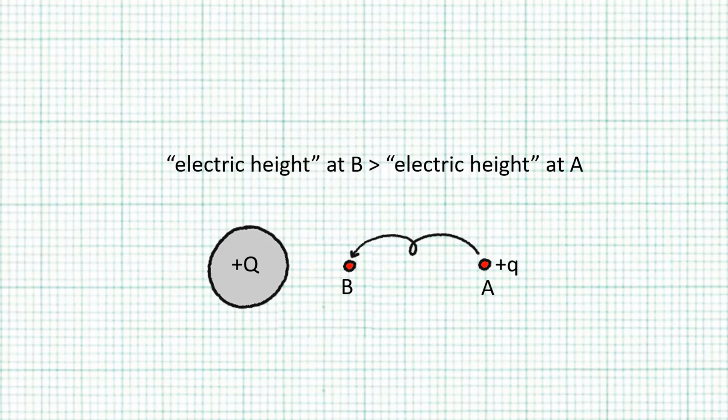So we can say that point B is electrically speaking higher ground than point A. This electrical elevation, so to speak, is called the electric potential.